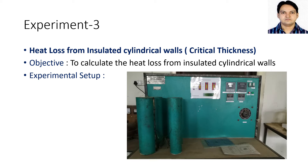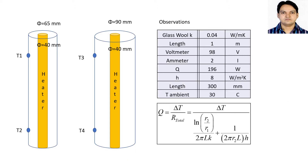The procedure we follow in all heat transfer experiments is the same. Here we will give input as voltage and current. In the middle of all these cylinders there is a heater, so when we supply power the heater will heat the inside surface and we will wait for steady state condition. Once steady state is achieved, the thermocouples connected on the surface of each cylinder will measure the temperature. For the first cylinder, the central heater diameter is 40 mm and the outer cylinder diameter is 65 mm.